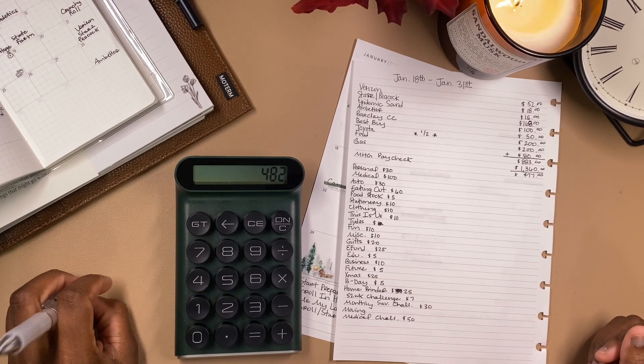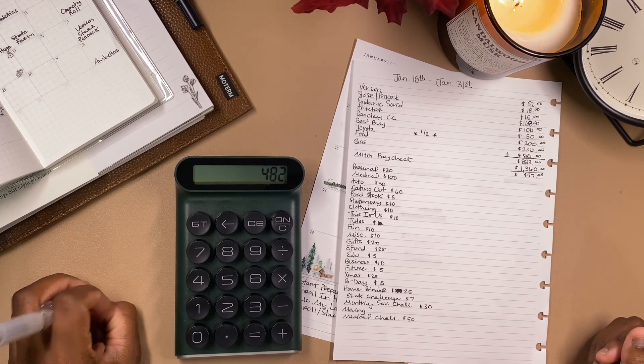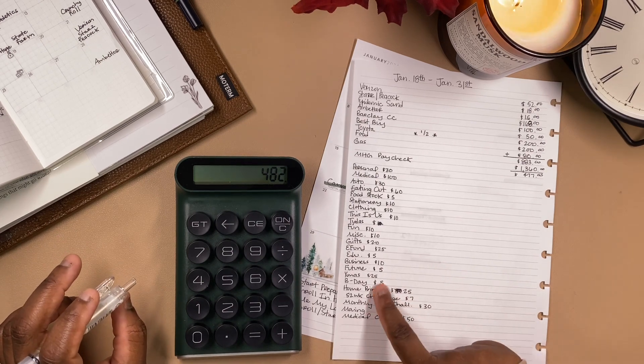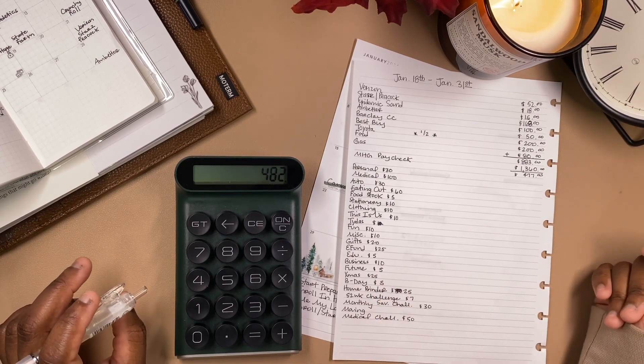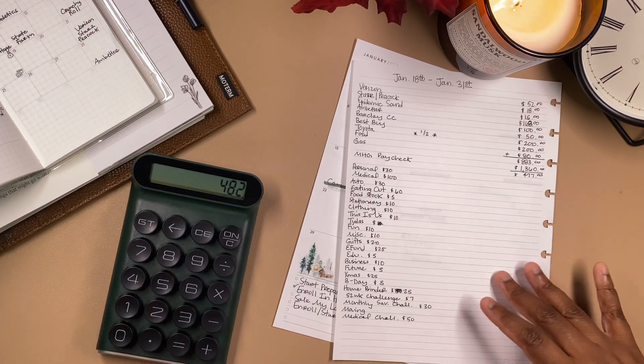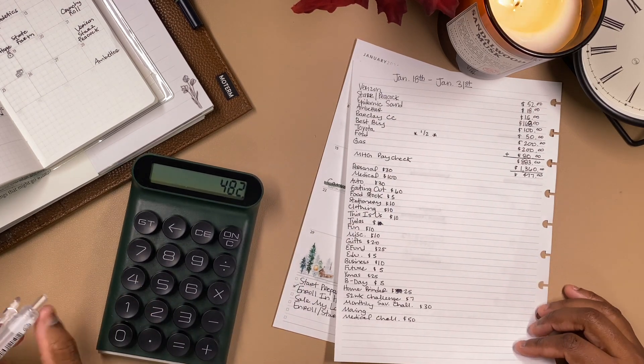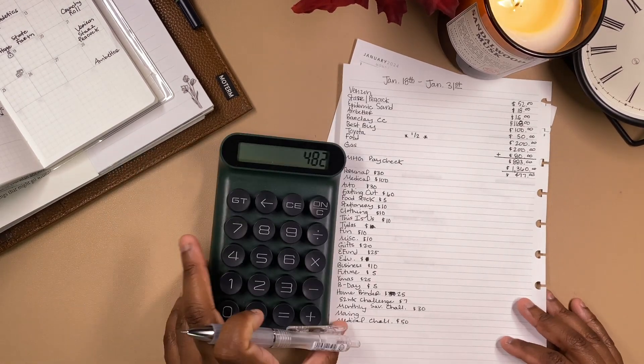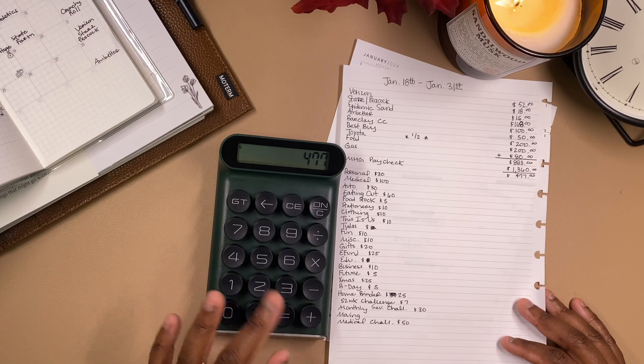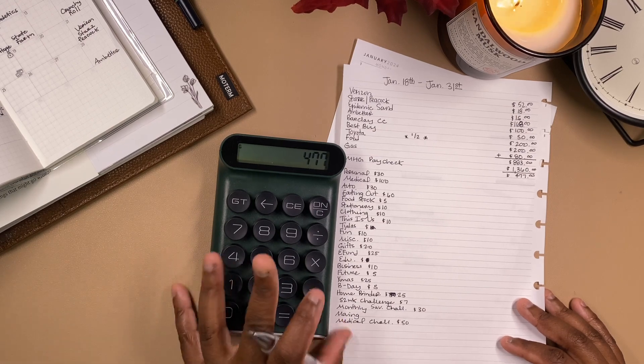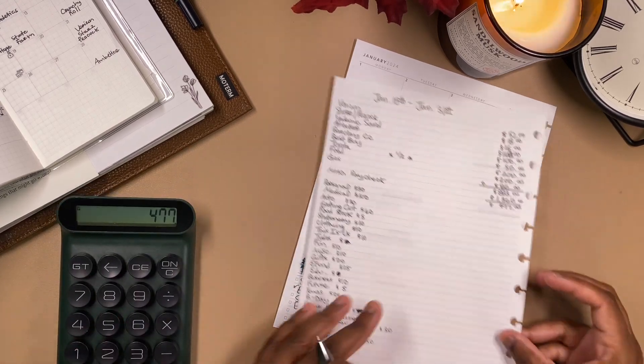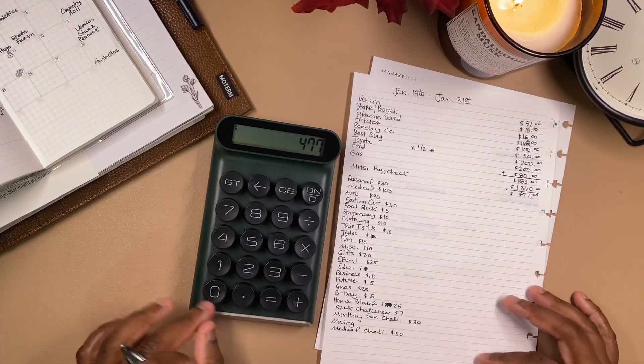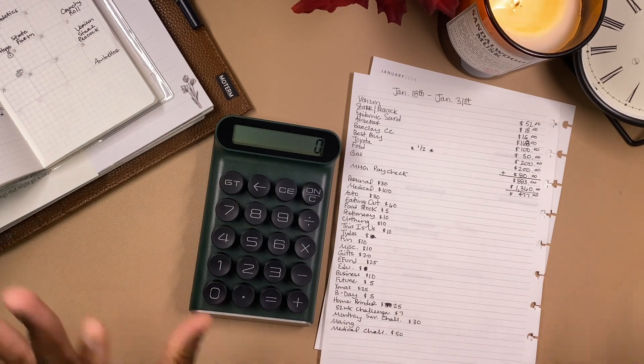So I'm still over by a couple of dollars, so we're just going to take it from something over here. Let's see, what can we take it from? Education, we could take that one off. I'm gonna take education off. Okay, so that's where we needed it. So we took $5 off. Alright, so I think we're at $477. I'm gonna add this all up again because I have to be sure.